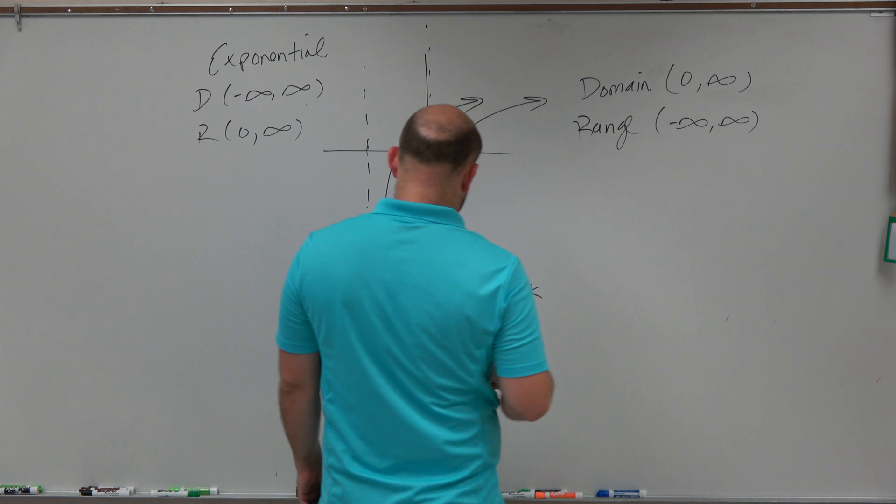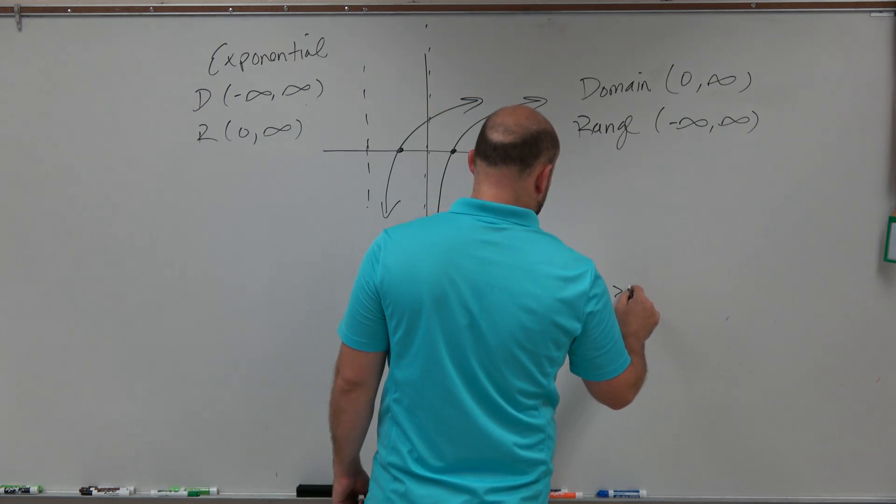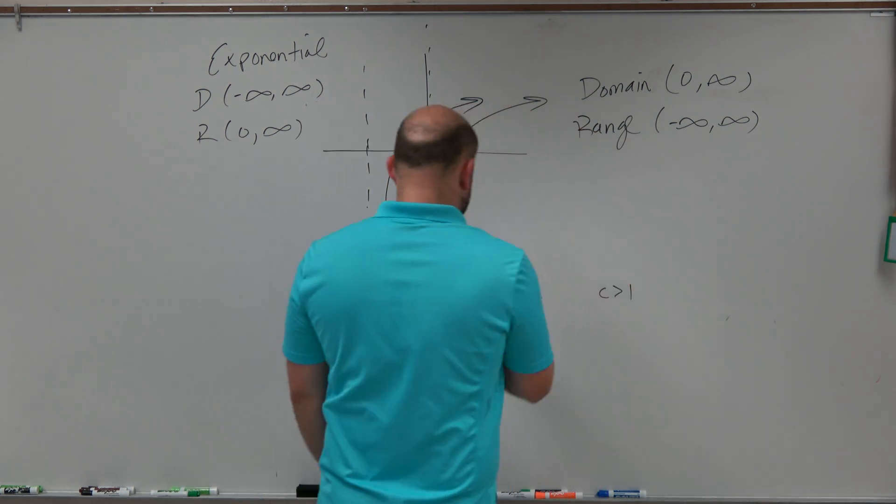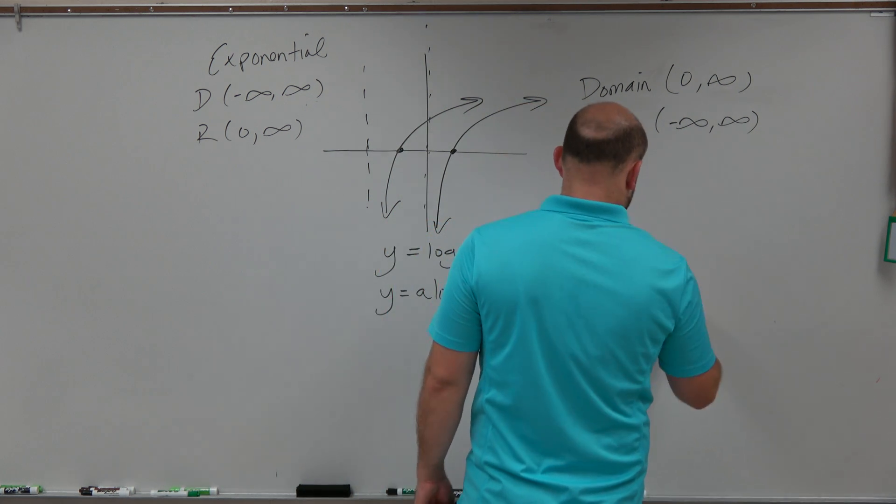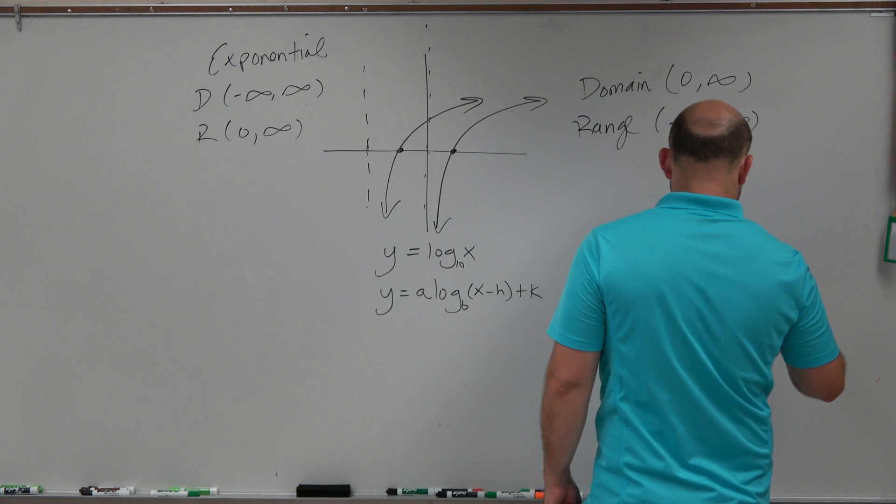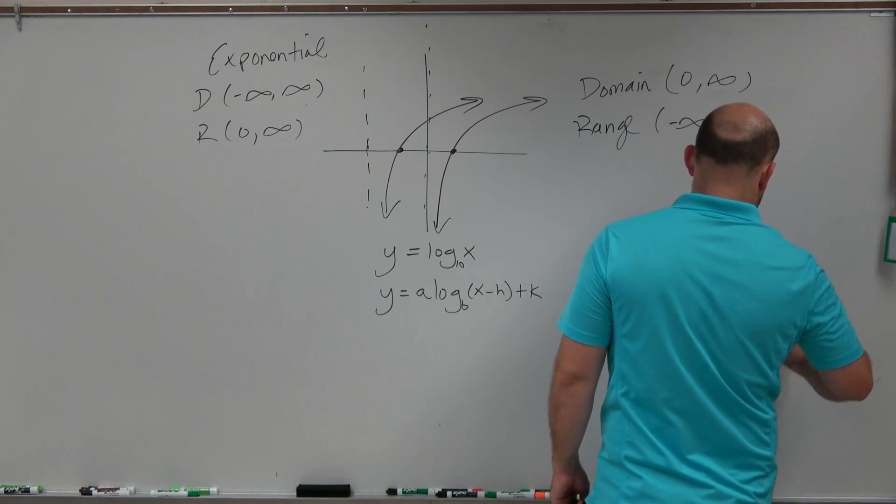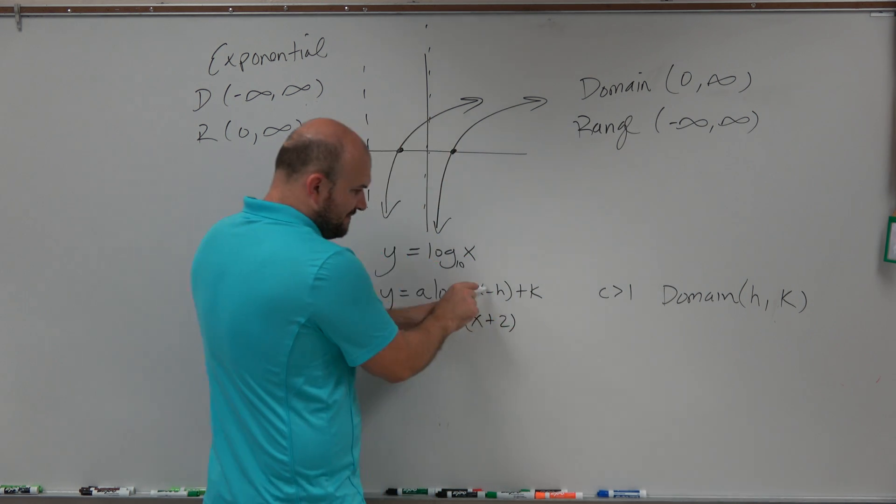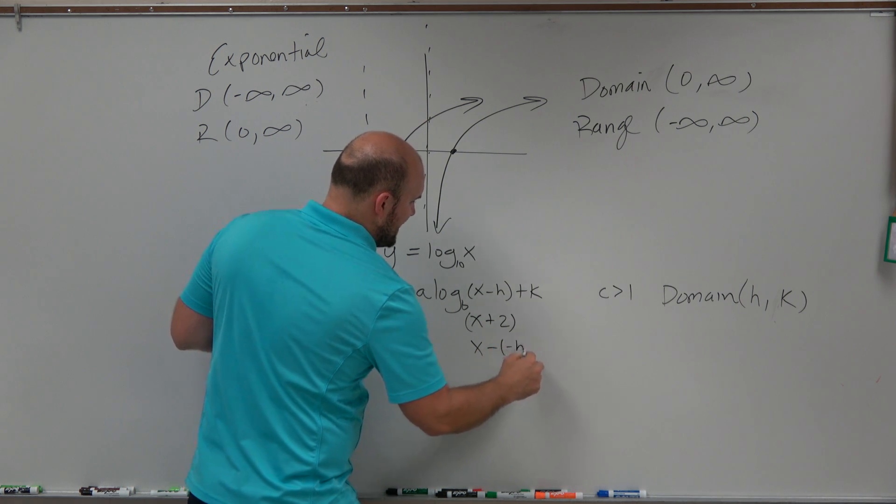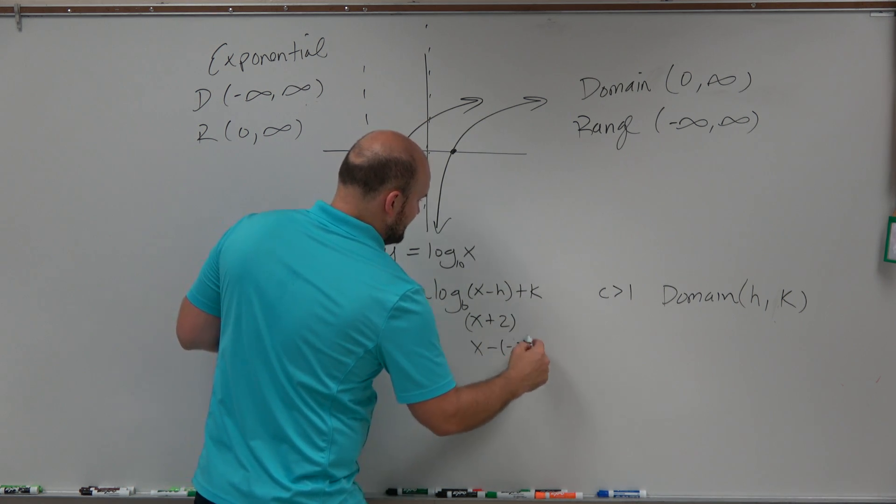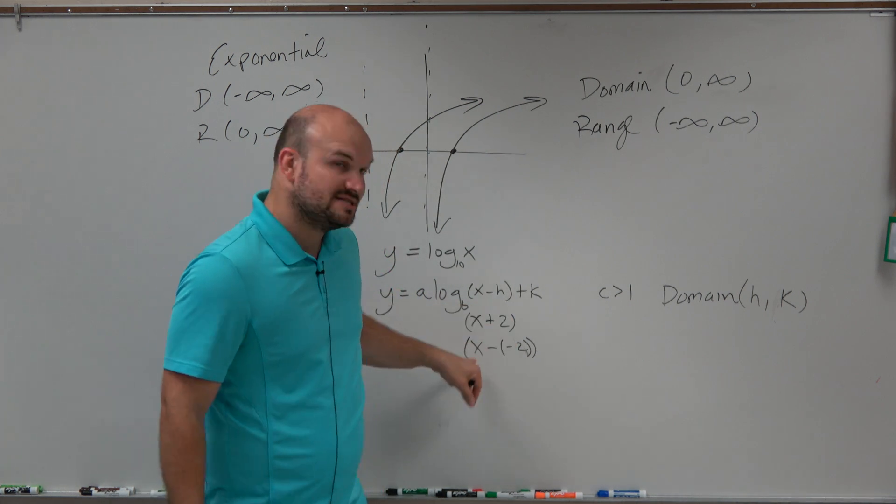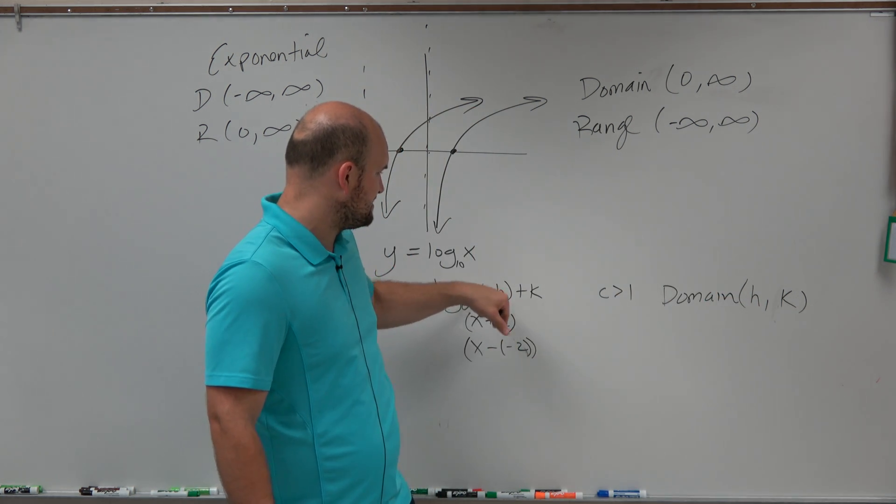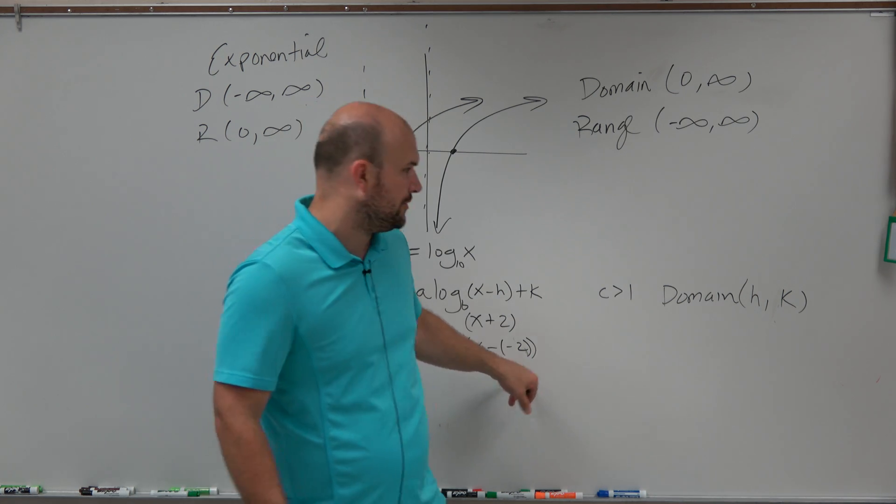So we can basically say that when c is greater than 1, you might say where's c come from? I'll talk about c in just a second. When c is going to be greater than 1, my domain is going to be h comma k. Now remember, I said that was x plus 2, right? Well, remember, if I was going to put it into that format, it would be x minus negative 2. So really, just to make sure you're understanding of that, x plus 2 is the same thing as x minus negative 2. So in reality, my h in this case is equal to negative 2 because it's x minus h. So it's x minus h, which in this case is negative 2.